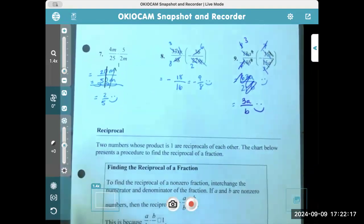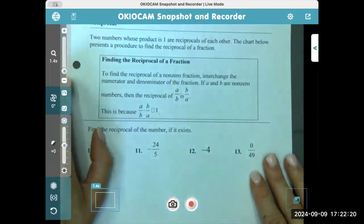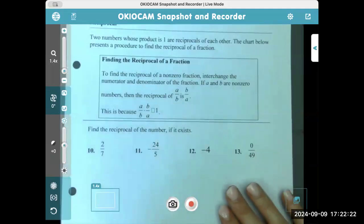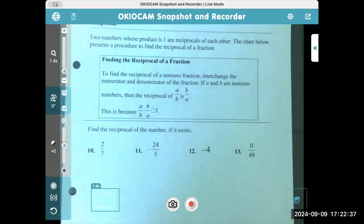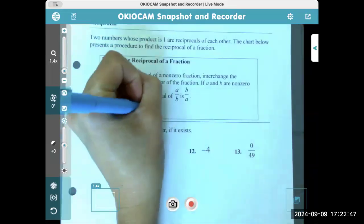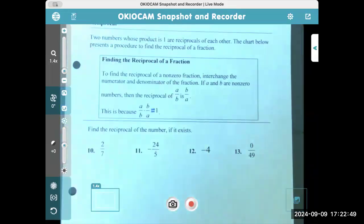Okay. Reciprocals. Two numbers whose product is one are reciprocals of each other. The chart below presents a procedure to find the reciprocal of a fraction. So finding the reciprocal of a fraction. To find the reciprocal of a nonzero fraction, interchange the numerator and denominator of the fraction. If a and b are nonzero numbers, then the reciprocal of a over b is b over a. This is because a over b times b over a is equal to one.